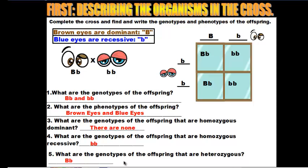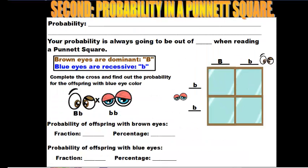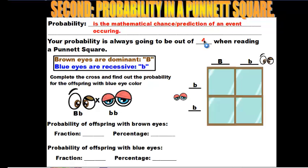There's another skill you need to be aware of: using probability. Probability is the mathematical chance or prediction of an event occurring. Since our Punnett square has four boxes, our probability is always out of 4, which works out in quarters. Your answers will be 1 out of 4 (25%), 2 out of 4 (50%), 3 out of 4 (75%), or 4 out of 4 (100%).